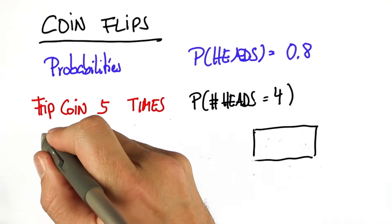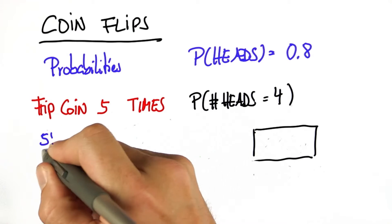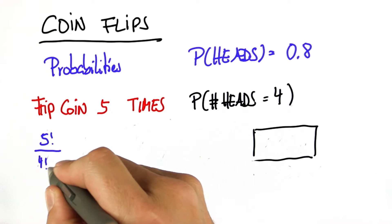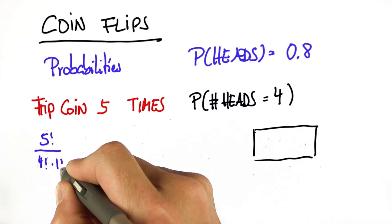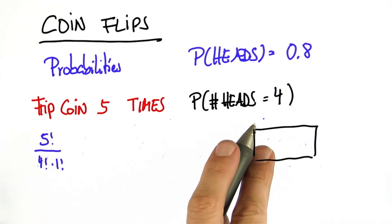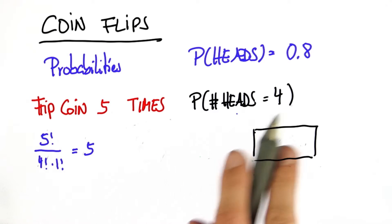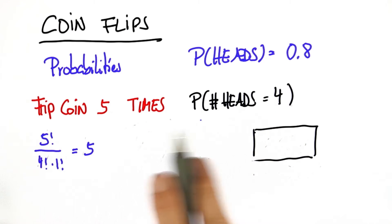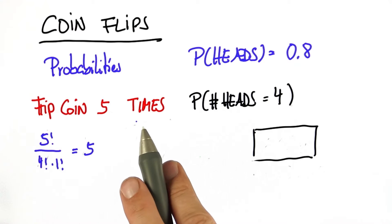So interestingly enough, we can do the trick as before. 5 factorial over 4 factorial times 1 factorial, which is the number of outcomes that have exactly 4 heads. We know that's 5. 4 heads means 1 tails. There's 5 ways to place 1 tails in this data over here.